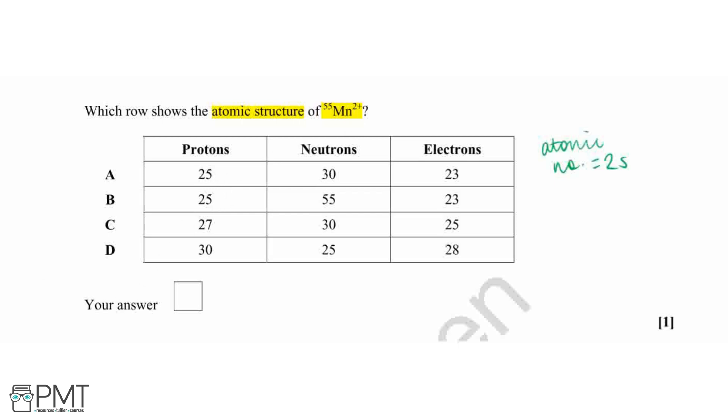So we can eliminate row C and D from our table, and our answer has to be either A or B.